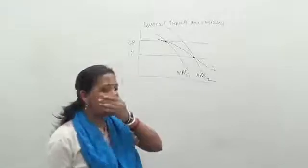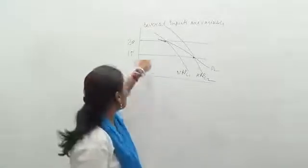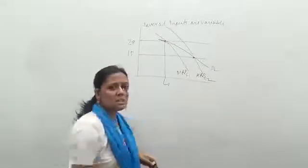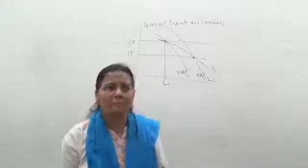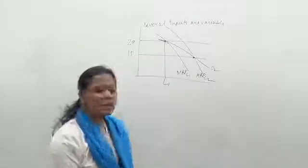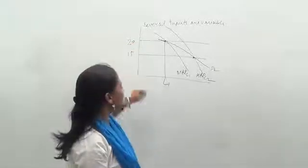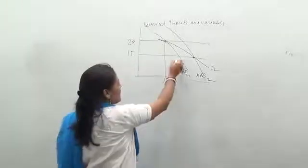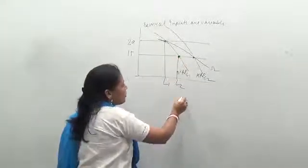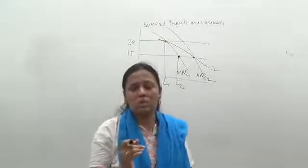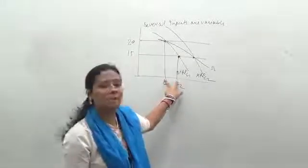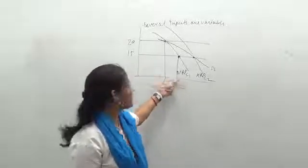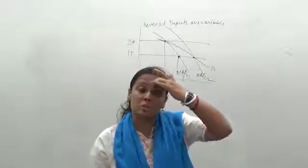When we took into consideration only one wage — suppose it is 20 rupees — this was the equilibrium, and OL1 is the equilibrium amount of labor employed. Now let us assume the wage has gone down from 20 rupees to 15 rupees. If we consider labor to be the only factor, then the equilibrium moves and the firm is able to employ more labor, from L1 to L2.